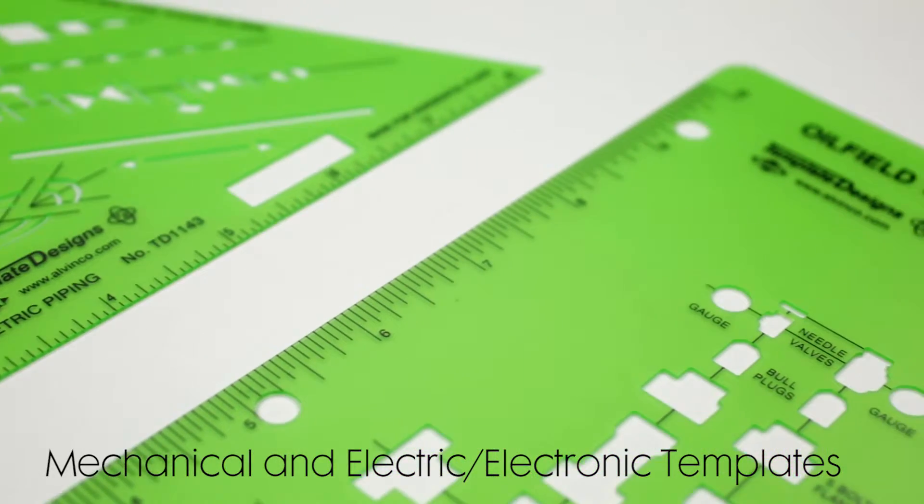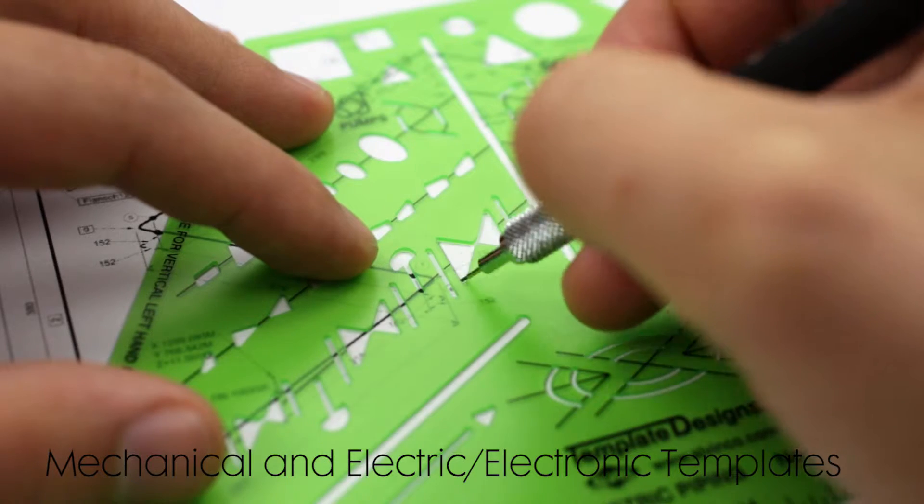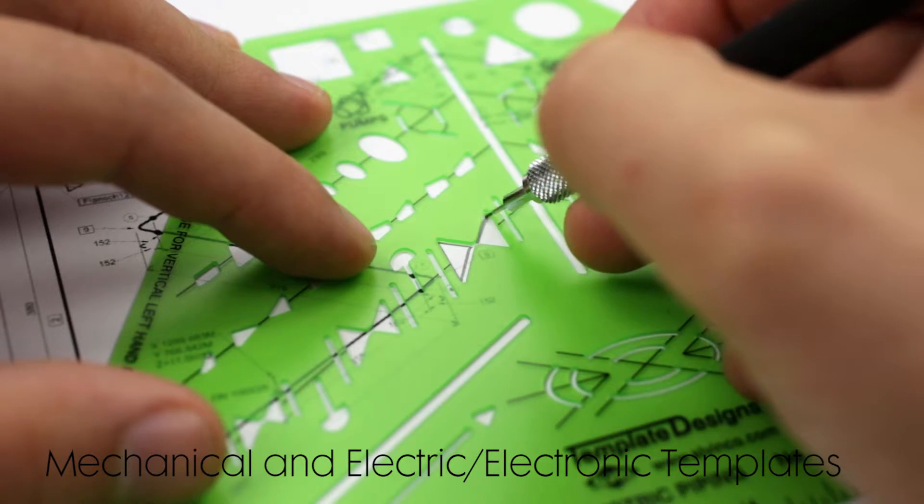Mechanical templates can be used in various technical drawings such as piping. Isometric templates can be used when drawing at different perspectives.